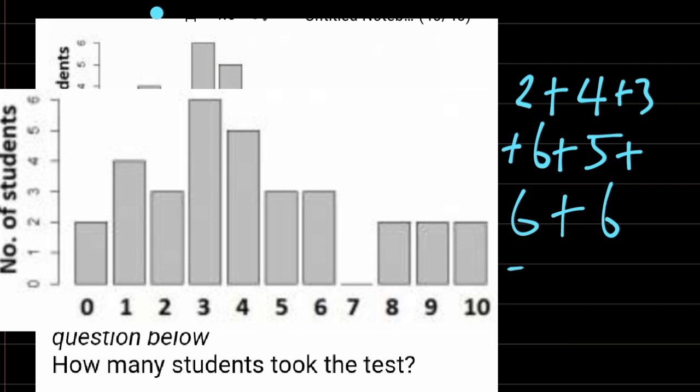Therefore, the total number of students that took this test is going to be 2 plus 4 plus 3, that is 9. 9 plus 6, that is 15. Plus 5, 20. Plus 6, 26. Plus 6, 32.